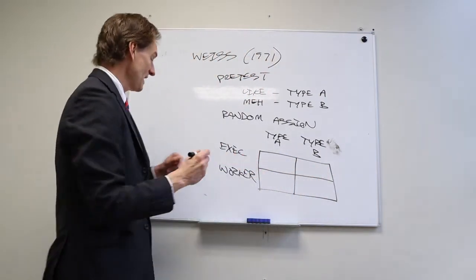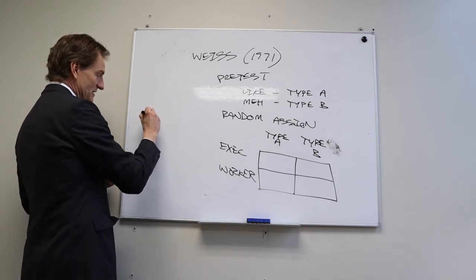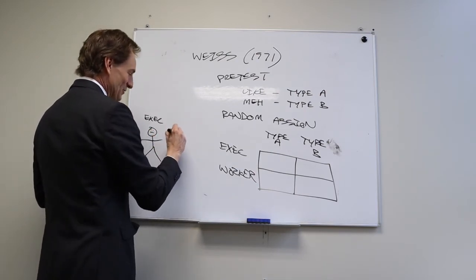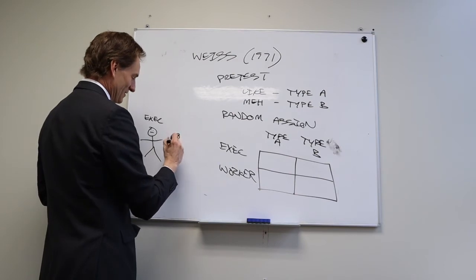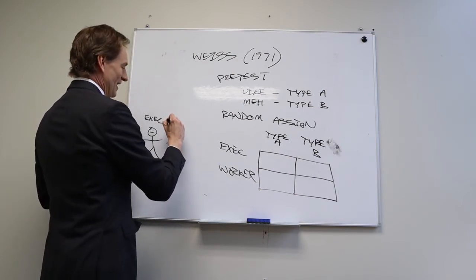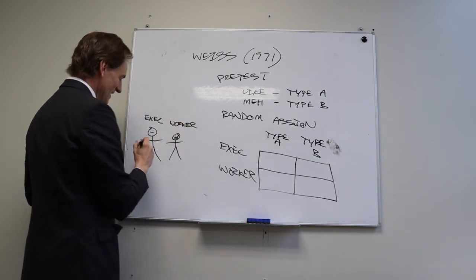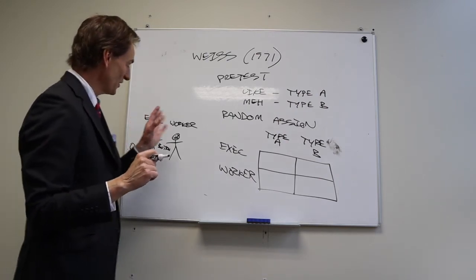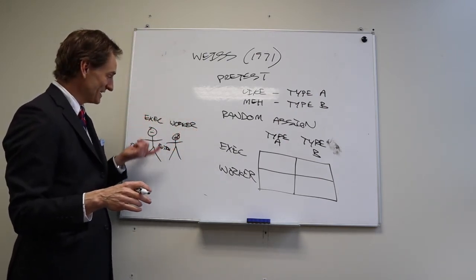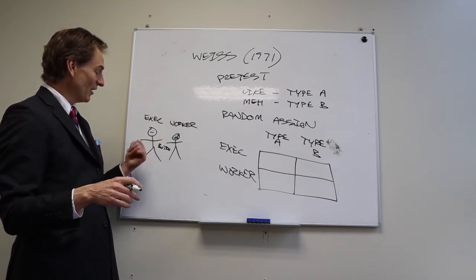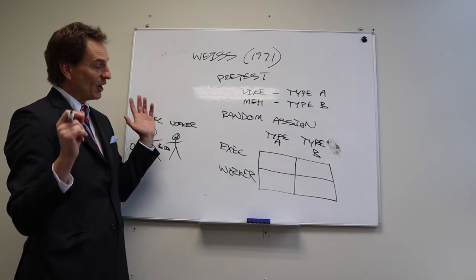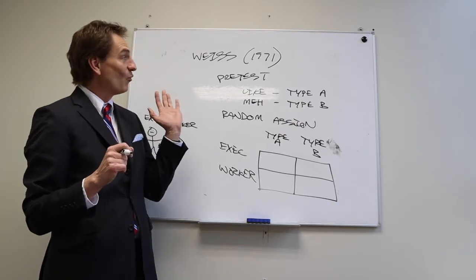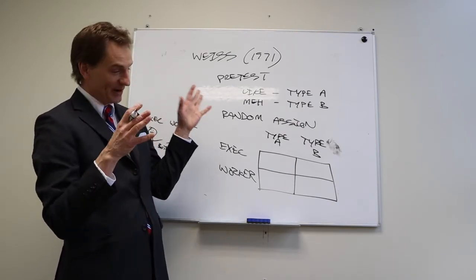The study was otherwise identical: two monkeys — one executive, one worker — placed side by side. There's a button and a light. If the executive doesn't hit the button when the light comes on, they both get a shock. The question becomes: who is it most stressful for under random assignment?